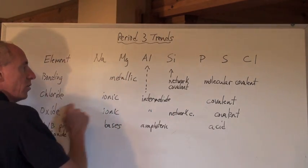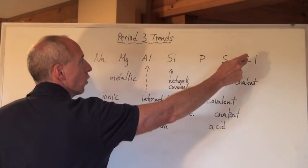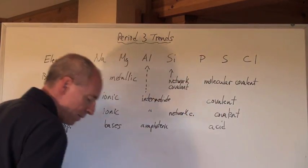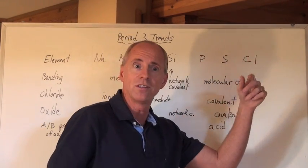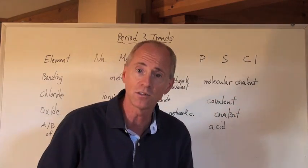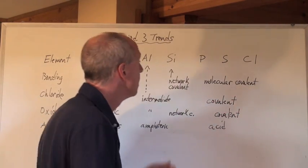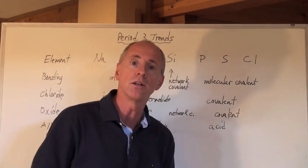Then as we go across, when oxygen bonds to phosphorus, sulfur or chlorine to form P2O3s or P2O5s and SO2s or SO3s and OCls or OCl2 more specifically, those chemicals are covalently bonded.